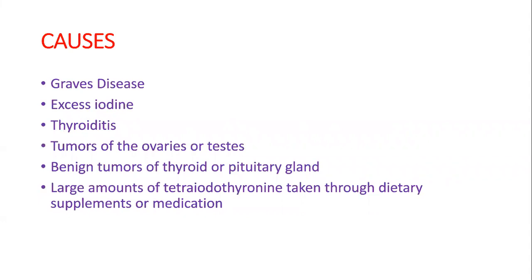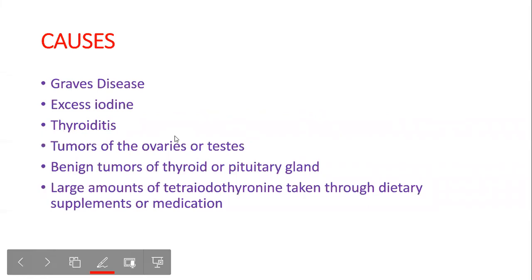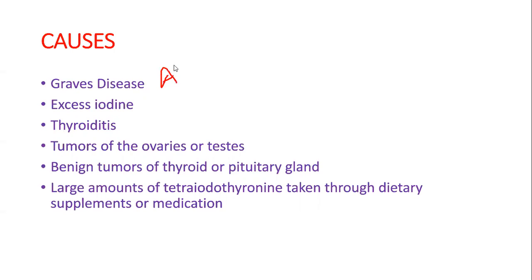Before going into the symptoms, I'll talk about the causes, starting with Graves' disease. Graves' disease is an autoimmune disorder characterized by the presence of an antibody called thyroid stimulating immunoglobulin. This is very similar to TSH in action — it stimulates thyroid hormone secretion — but it does not have a negative feedback mechanism like TSH does.